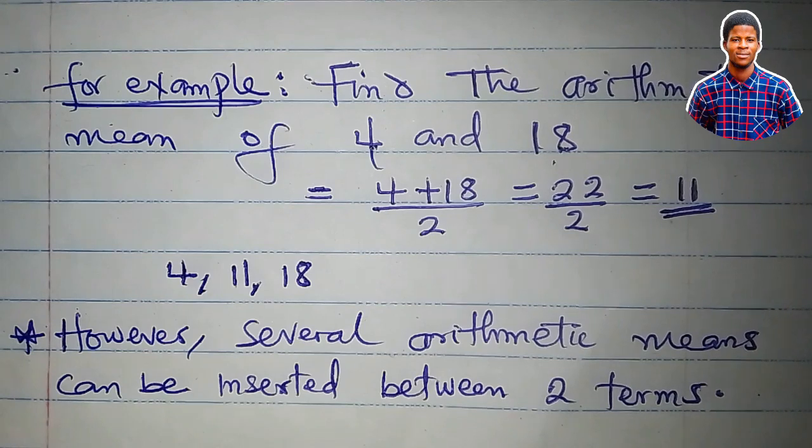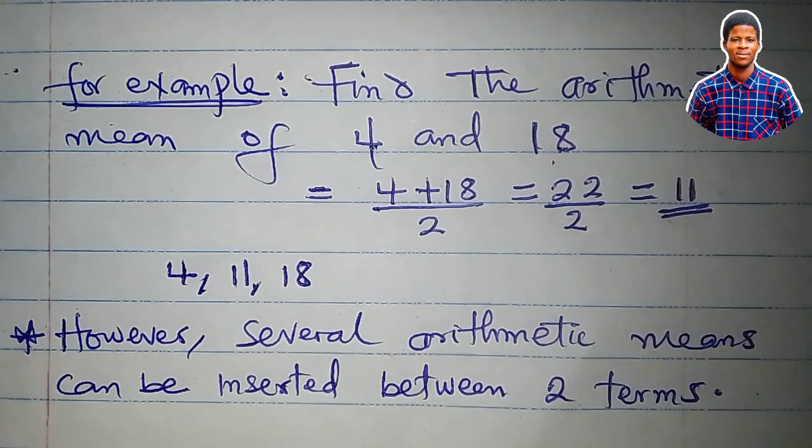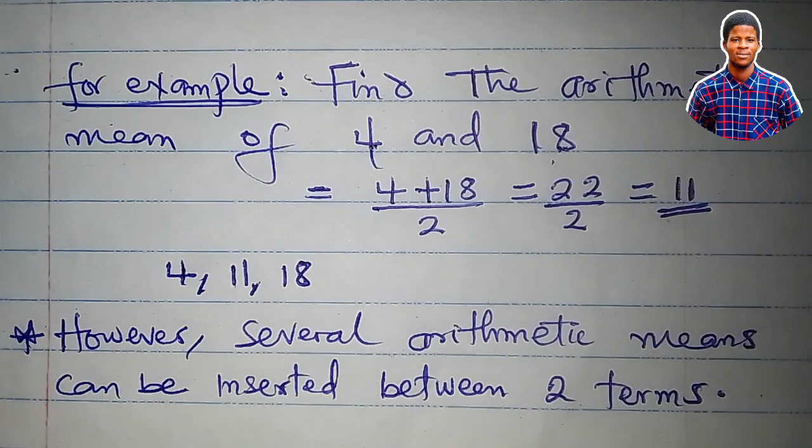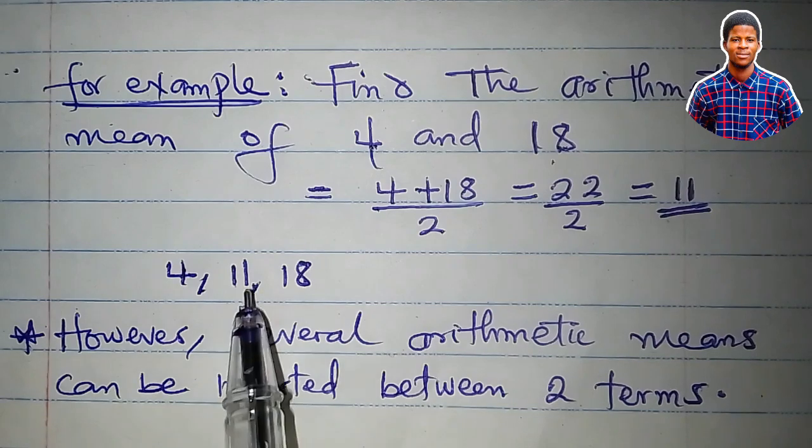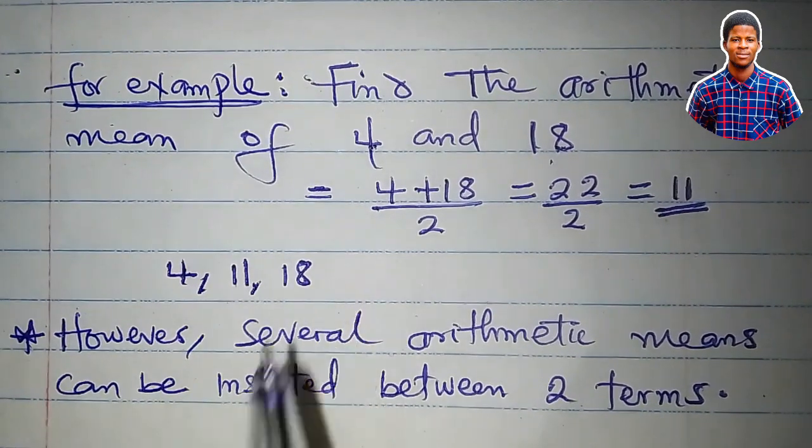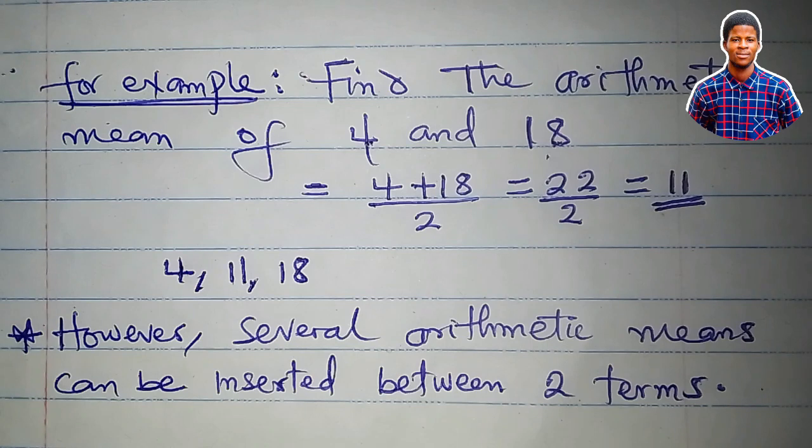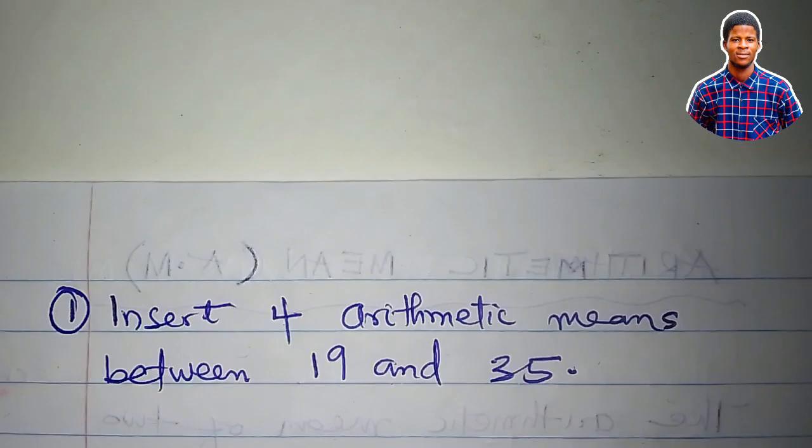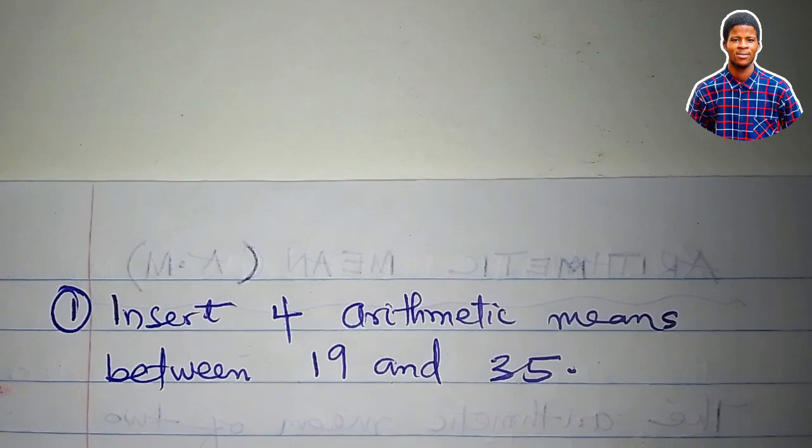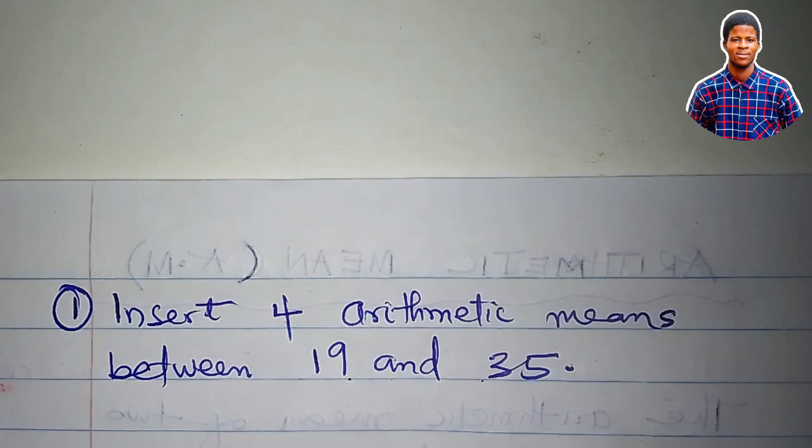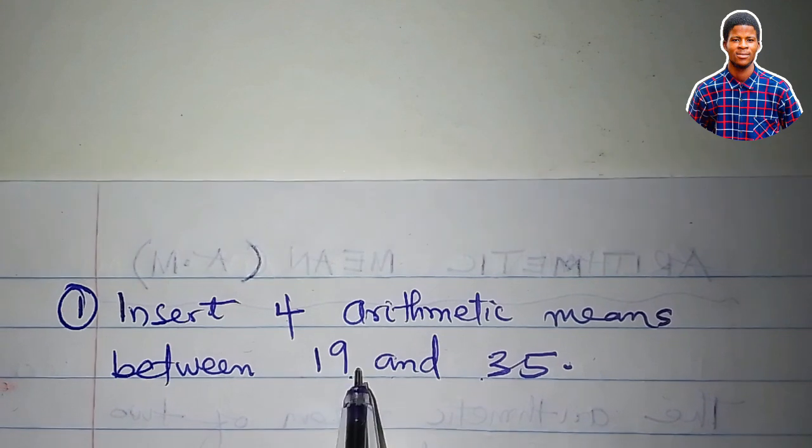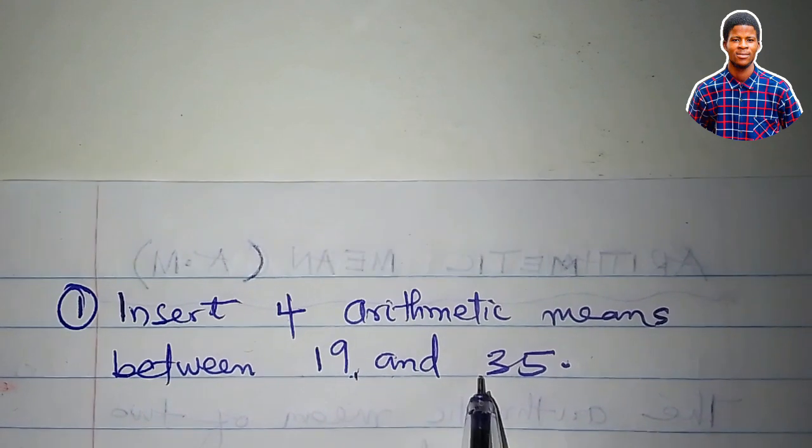However, several arithmetic means can be inserted between two terms. It is possible for us to insert more than one arithmetic mean between two numbers. So just watch the video to the end and see how such problems should be handled. Now, the question says insert 4 arithmetic means between 19 and 35. What this question is actually saying is that we should insert 4 numbers in between 19 and 35.